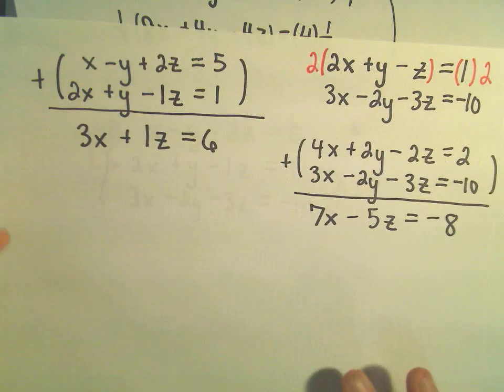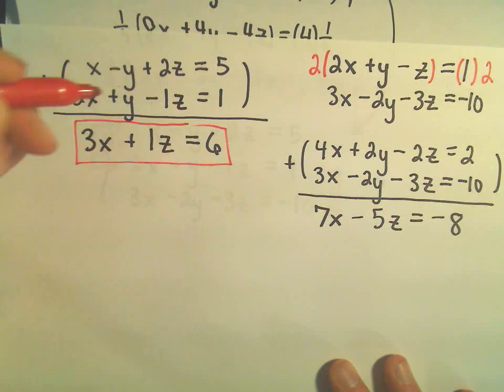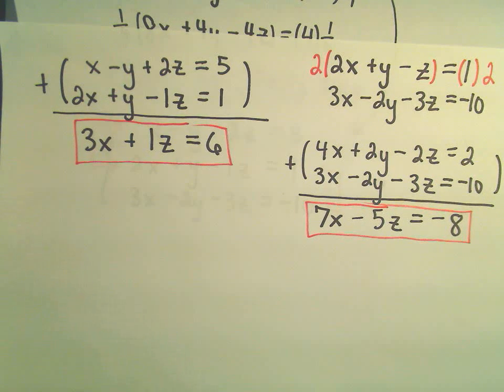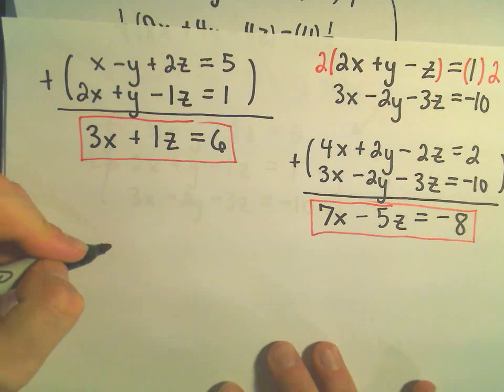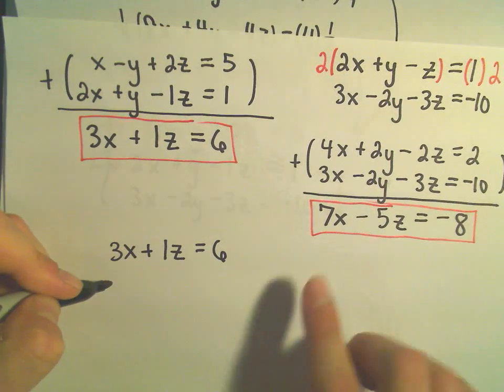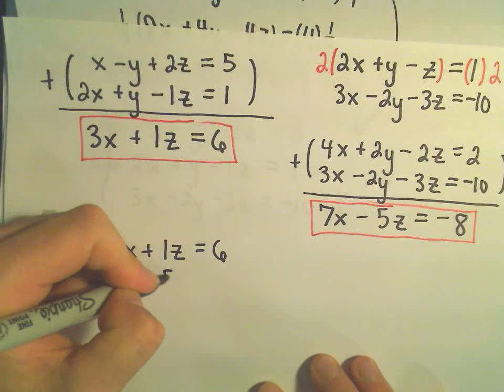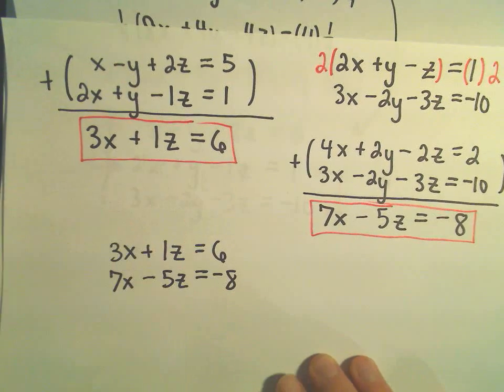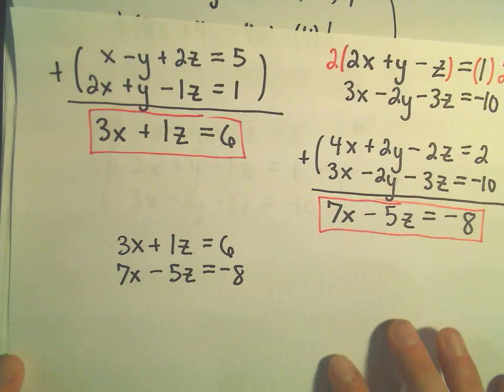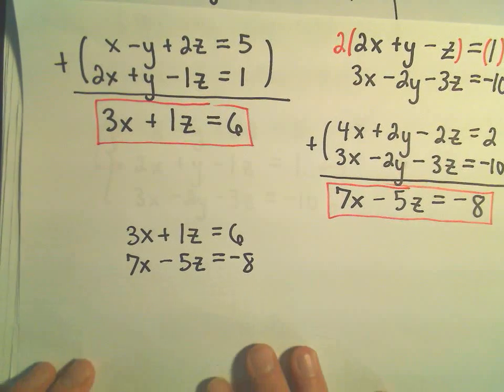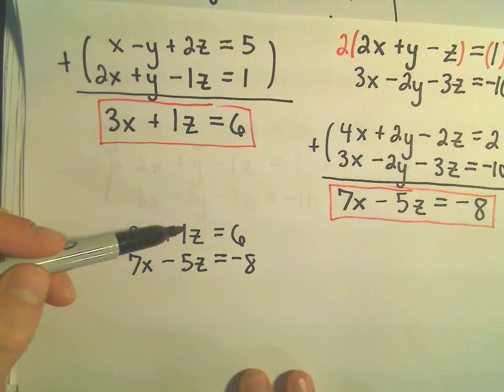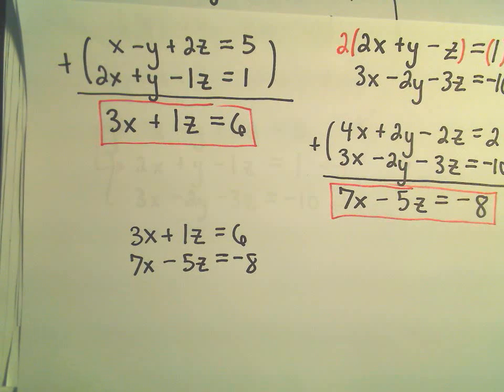So notice now we have these two equations. 3x plus z equals 6. And 7x minus z equals negative 8. Now my goal is to basically repeat this procedure with these two equations to again try to eliminate one of those variables. So I'm going to just kind of put those on top of each other. Okay, so all that worked just to get down to kind of a smaller system of equations is the basic idea. So to me it looks again like the easiest way to get something to cancel out. I think I'm going to multiply the first equation by positive 5. And then I'll get 5z and a negative 5z. And hey, then things will cancel out.